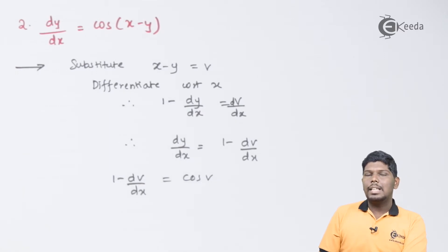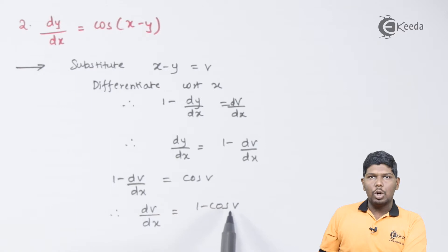Now, as you can see, the sum has become much simpler. We can directly separate the variables now, but before that, we need to take 1 on the right hand side.